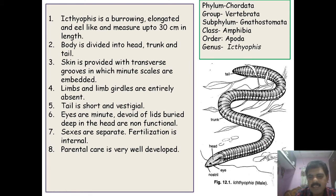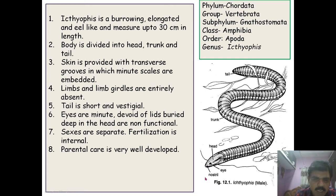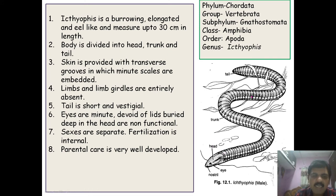Limbs and limb girdles are entirely absent — the forelimbs and hind limbs are absent, as are the girdles. The tail is short and vestigial. The eyes are minute, devoid of eyelids, buried deep in the head, and non-functional; therefore it is called a blind worm. The sexes are separate, fertilization is internal, and parental care is very well developed — Ichthyophis cares for its eggs through total development.